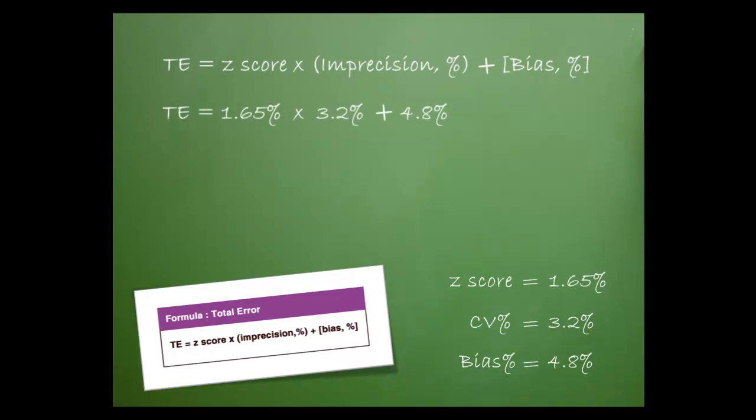First, I substituted the values into the formula. Then I multiplied 1.65 by 3.2. Then I added 5.28 and 4.8. Finally, we have a total error of 10.1%.